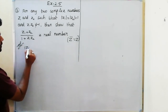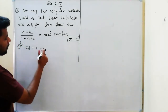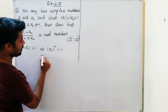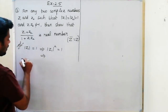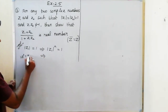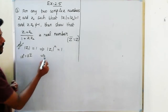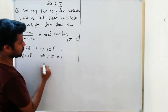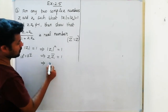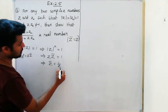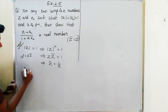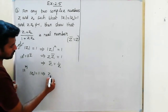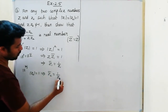Now, modulus z1 equals 1. So z1·z̄1 equals 1, which means z̄1 equals 1 by z1. Similarly, modulus z2 equals 1, so z̄2 equals 1 by z2.